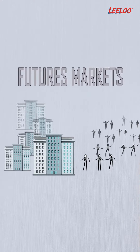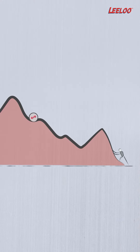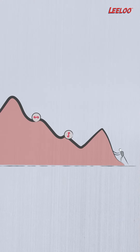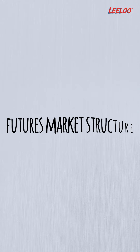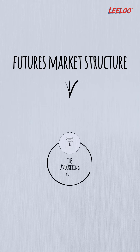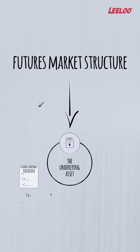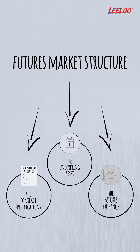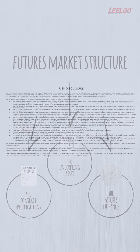A futures contract is underpinned by three crucial components: the underlying asset, the contract specifications, and the futures exchange where the market is traded.